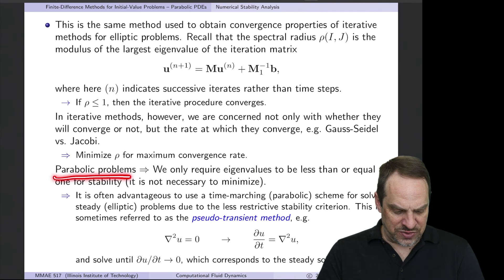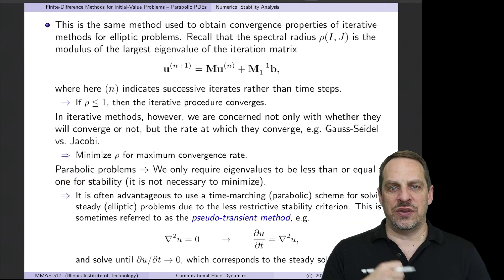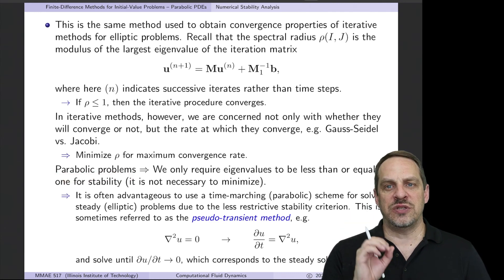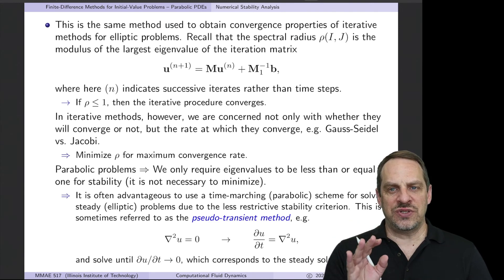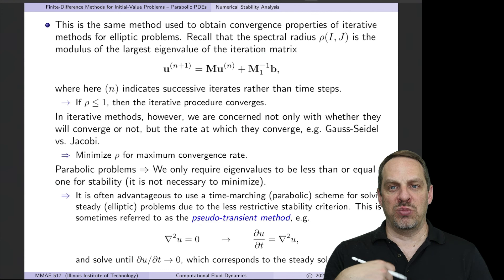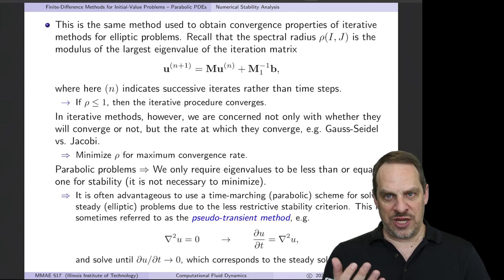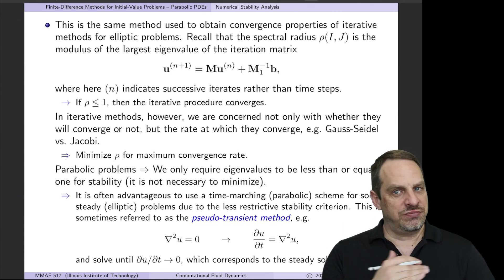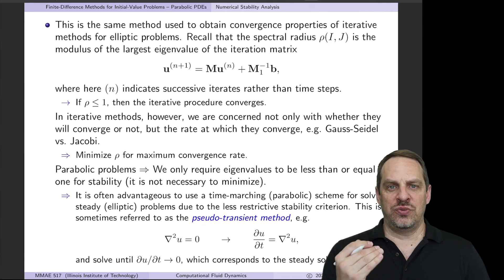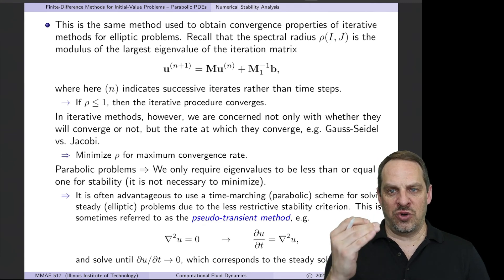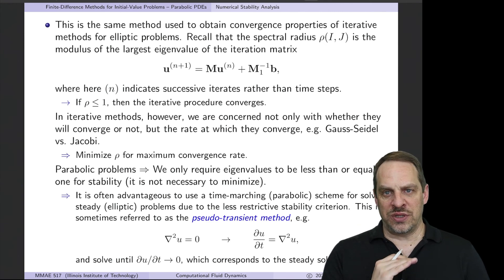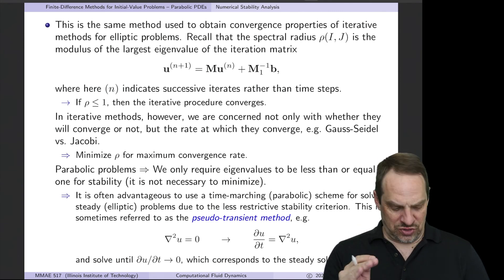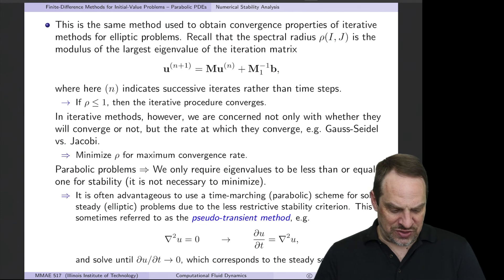Here for parabolic problems, things are similar in the sense that numerical stability is based on these eigenvalues of this giant matrix. However, the difference is there is no such thing as a method being more stable than another. It's either stable or it's unstable. So if it's stable, that's all we care about. There's no practical value of the rho being much less than 1. So as long as it's less than or equal to 1, it will give us a stable solution.